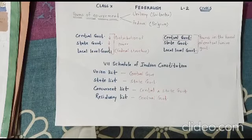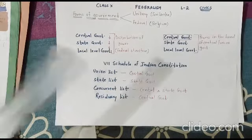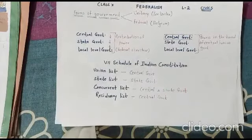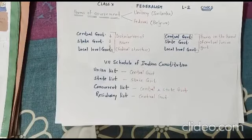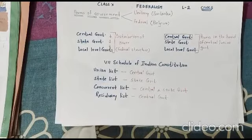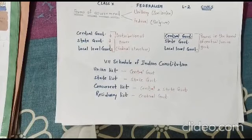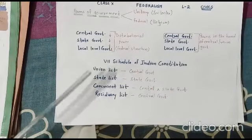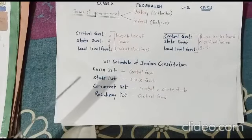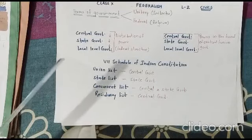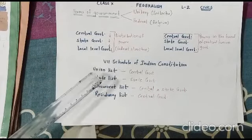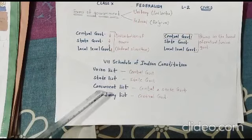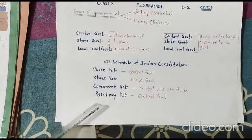In our country, the seventh schedule of the Indian constitution specifically talks about the mechanism of distribution of power. There are four lists in the constitution itself: Union list, State list, Concurrent list, and Residuary list.